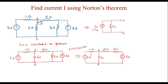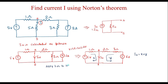To find In, we will apply loop analysis. Let the current through one branch be x and through the other branch be y, so In equals x plus y. Applying KVL to loop x, I can write 5 equals 1 times x, which gives x equal to 5 amps.